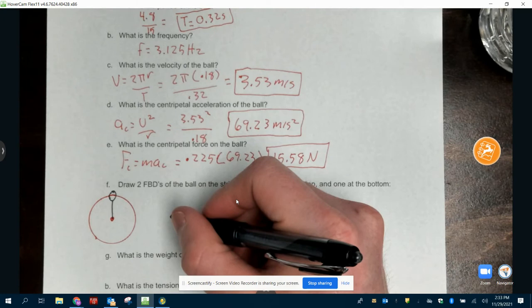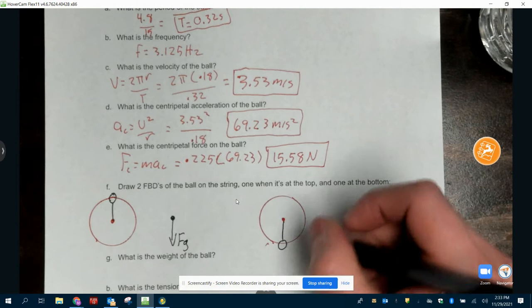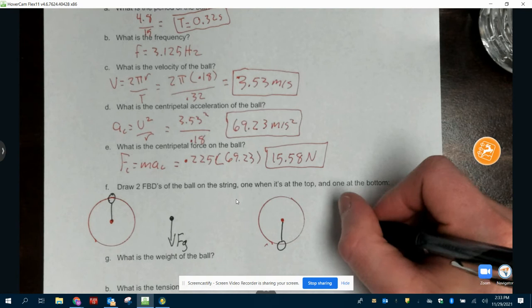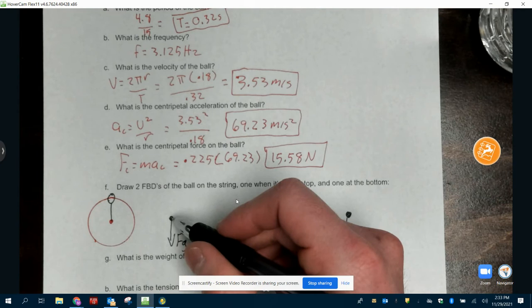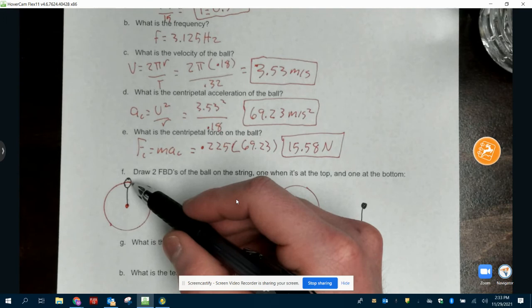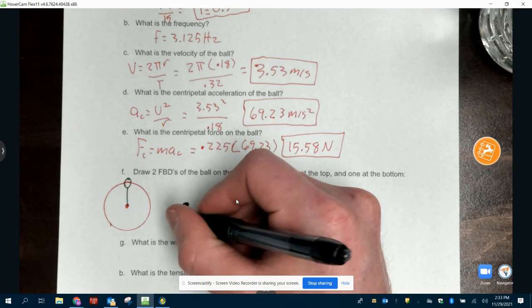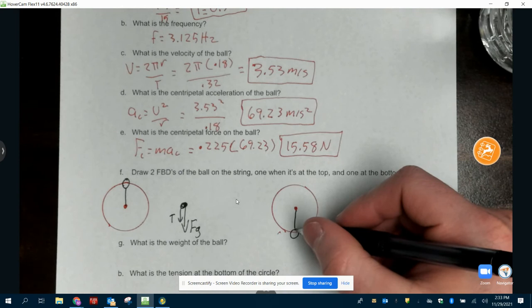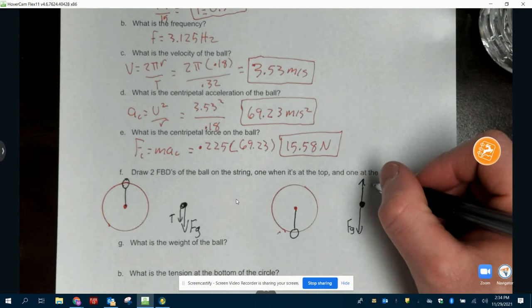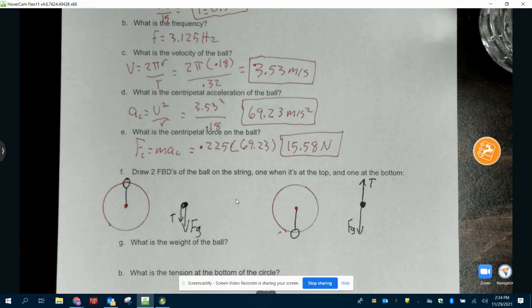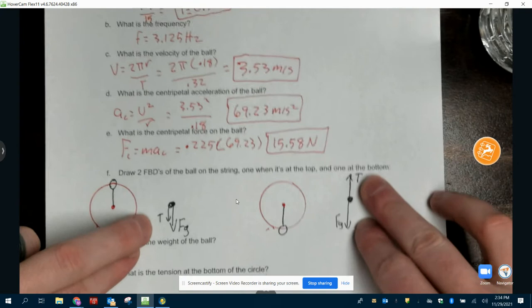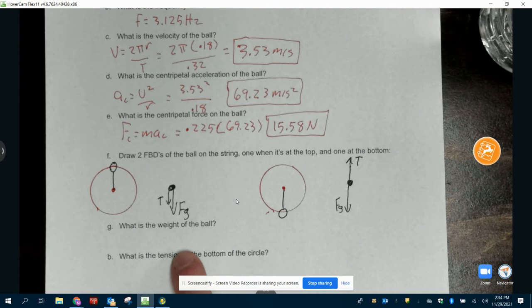What force acts on it the whole time? Gravity. And it pulls it straight down. So we've got Fg goes down on both of these. The difference ends up being, well, which way does tension pull on this one? Tension is pulling which way on this ball? It's pulling this ball down. So there's actually another downward force of tension here. Here, tension is pulling this one up. So tension goes this way. So this is the difference. Our two free body diagrams look very similar, but they are different.